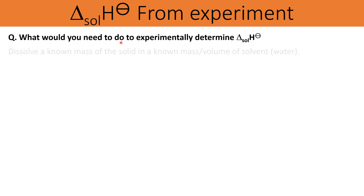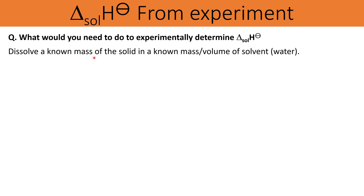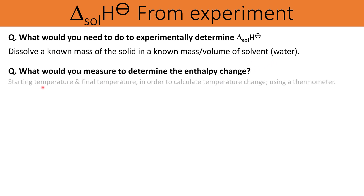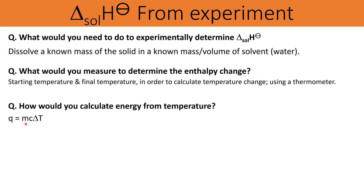You need to dissolve a known mass of the solid in a known mass or volume of water, then measure the starting and final temperatures to calculate the temperature change. Use q = mcΔT, then q/n — dividing the energy change in joules by the number of moles — to calculate the enthalpy change per mole. You'll also need to convert q into kilojoules by dividing by 1000.